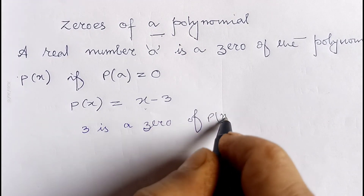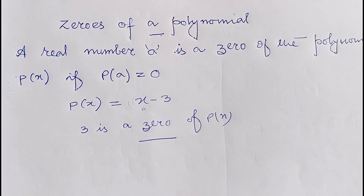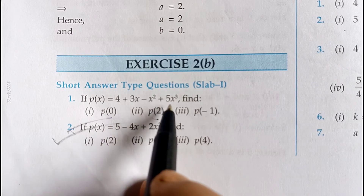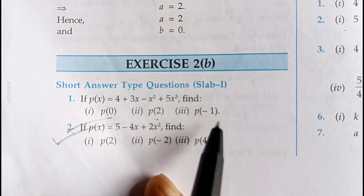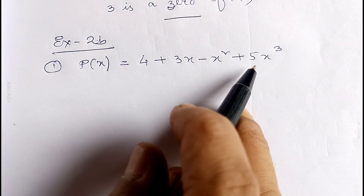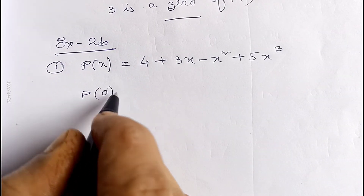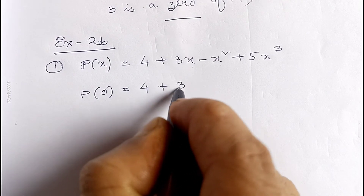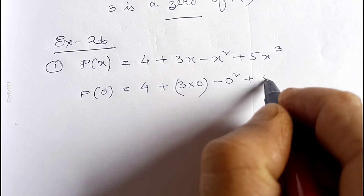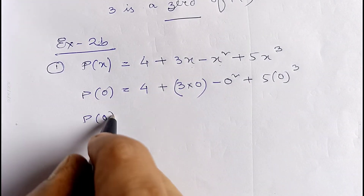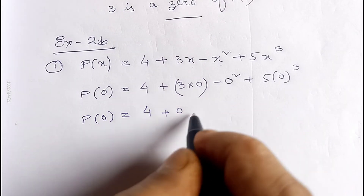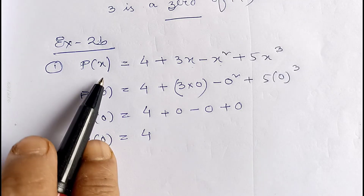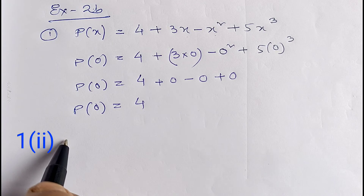Now I am going to show sums of Exercise 2B. Question 1: if p(x) equals 4 plus 3x minus x² plus 5x³, find the value of p(0), p(2), and p(-1). For p(0) we replace x by 0, so we get 4 plus 3 into 0 minus 0² plus 5 into 0³. All terms with x become zero, so p(0) equals 4. Therefore the value of the polynomial when x equal to 0 is 4.